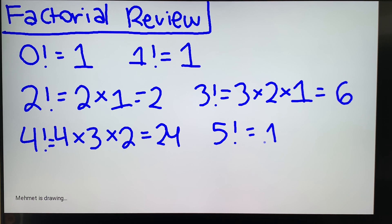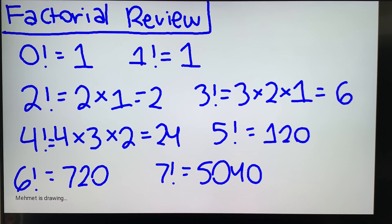So 5 factorial is 120, 6 factorial is 720, and then 7 factorial, if you did out the multiplication, is 5,040. And you really only need to know up to 7 factorial. But these are really the most important ones.